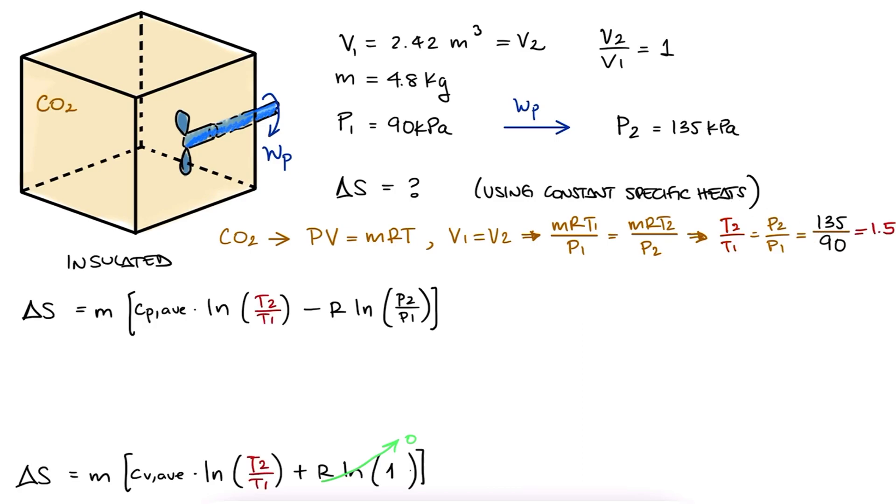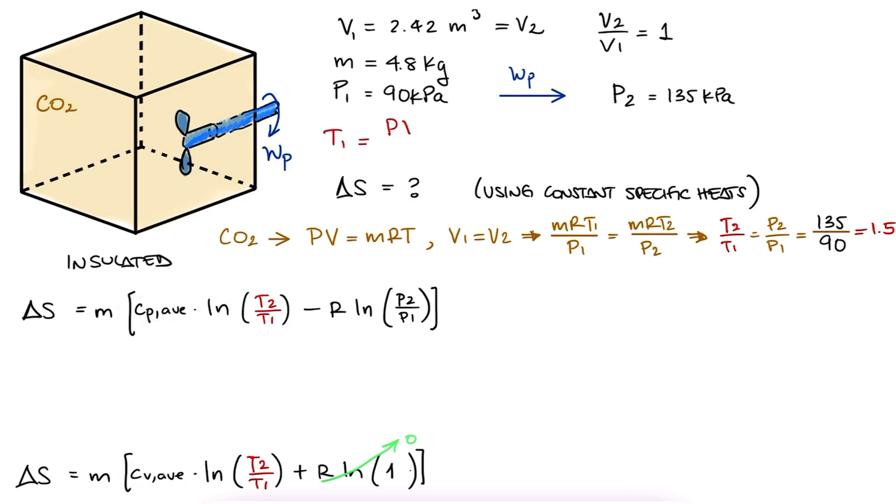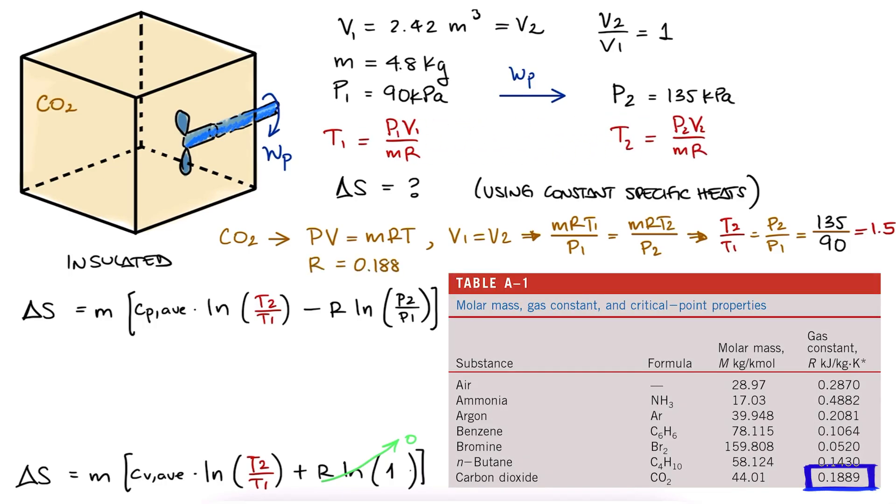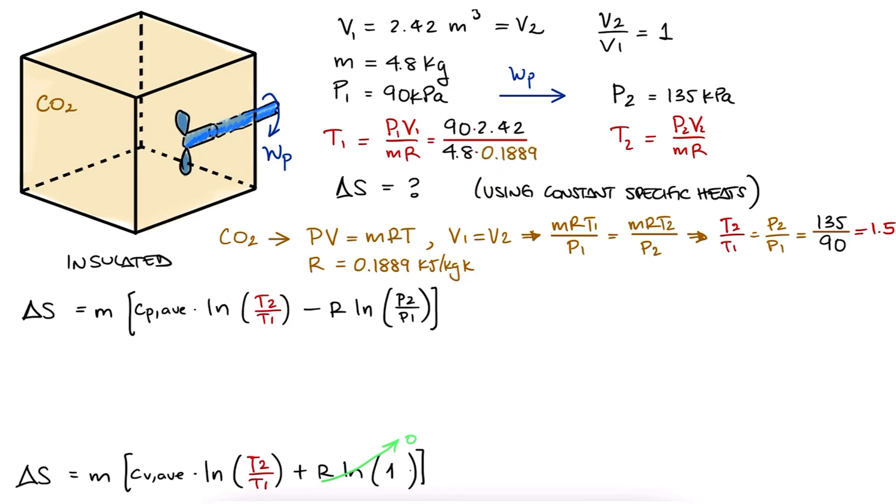Now we weren't given the temperatures, but that doesn't mean we cannot calculate them. We do need to know the temperature so we can take an average specific heat value. Since we're dealing with an ideal gas, we can calculate the temperatures as PV over MR, with R being the gas constant for CO2. Substituting the values, we find that the temperatures are 240.2 and 360.3 Kelvin.